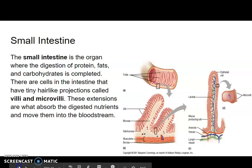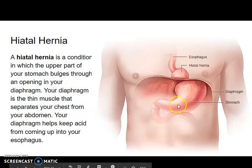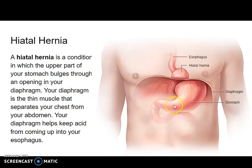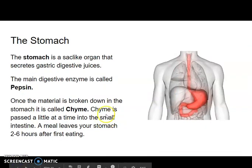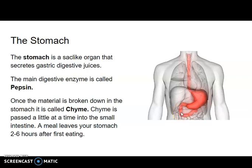Before we go into the small intestine: when the stomach digests food and empties into the small intestine, the digested material is called chyme — spelled C-H-Y-M-E. Chyme is passed a little bit at a time into the small intestine, and we'll cover the small intestine in the next video.